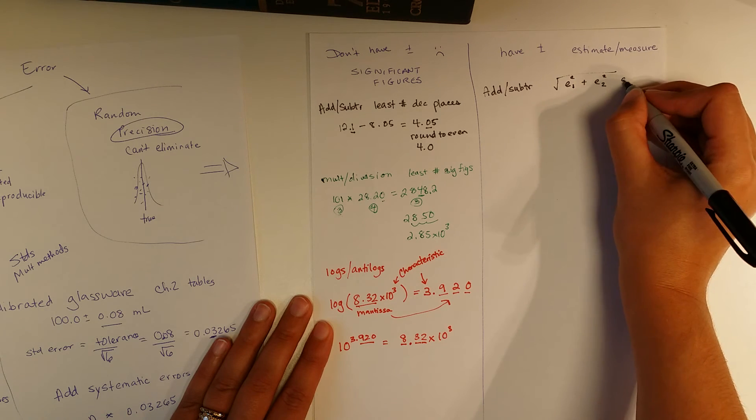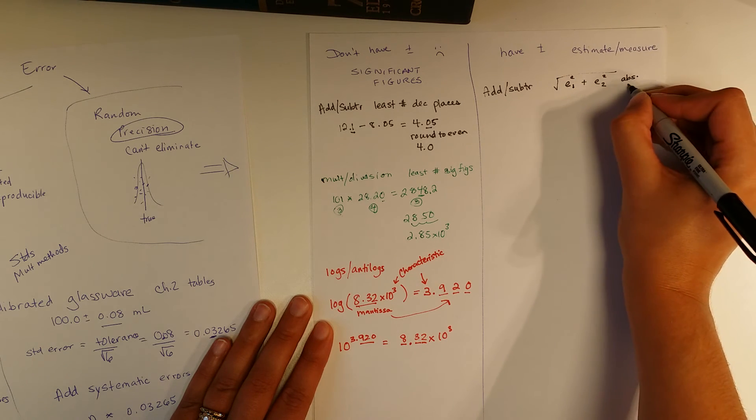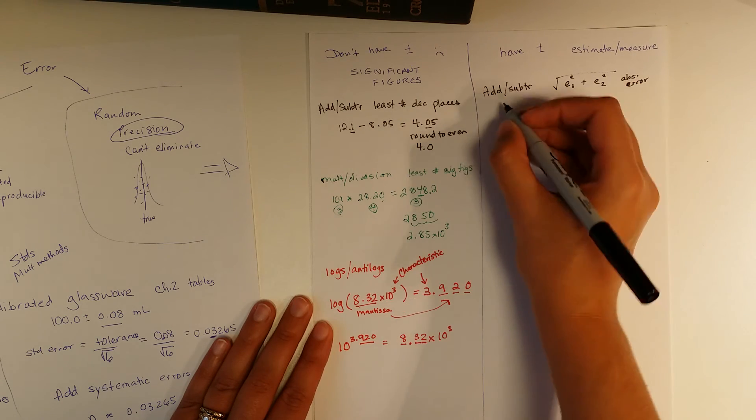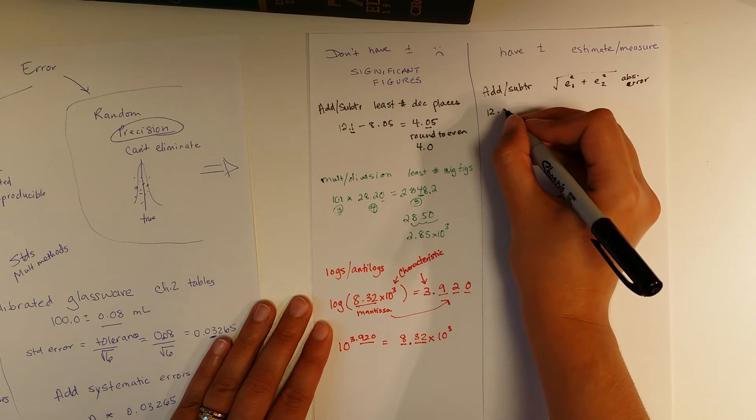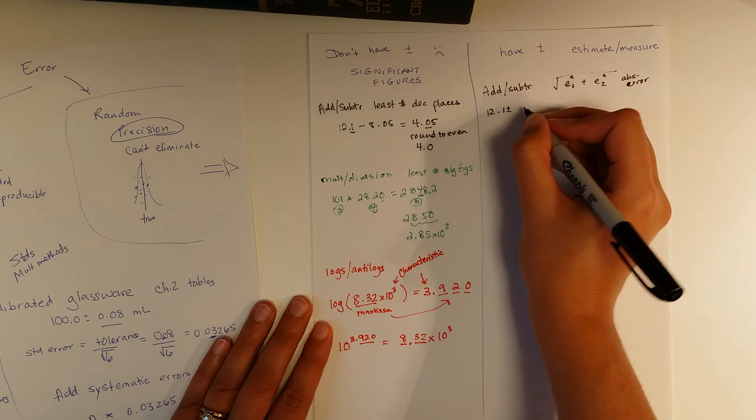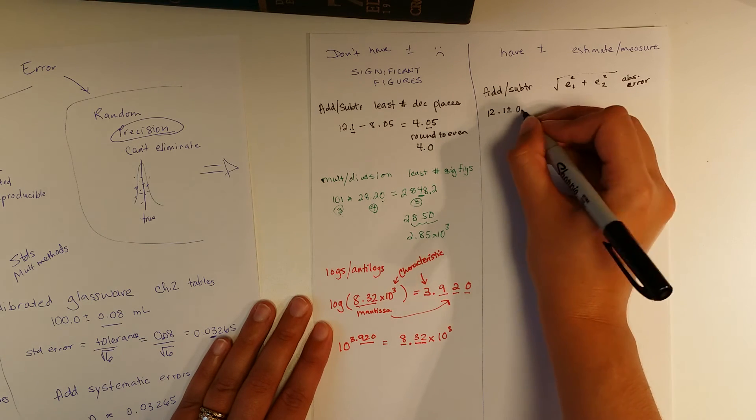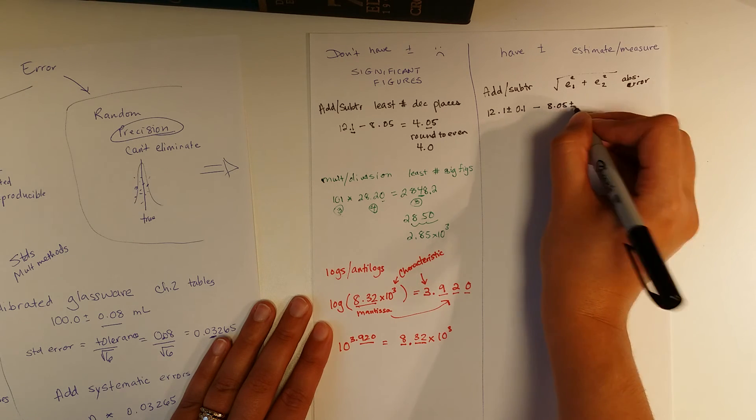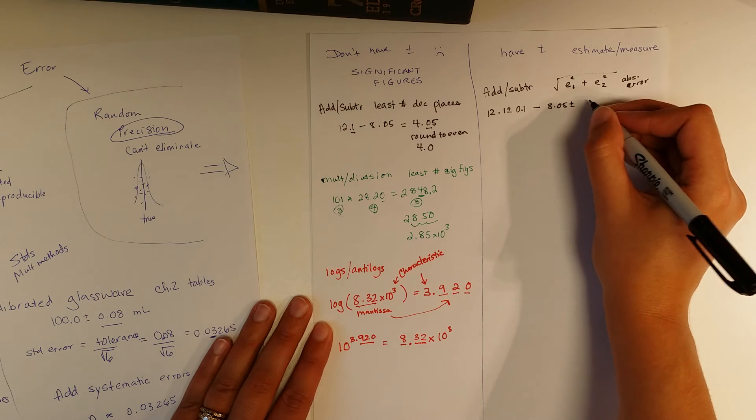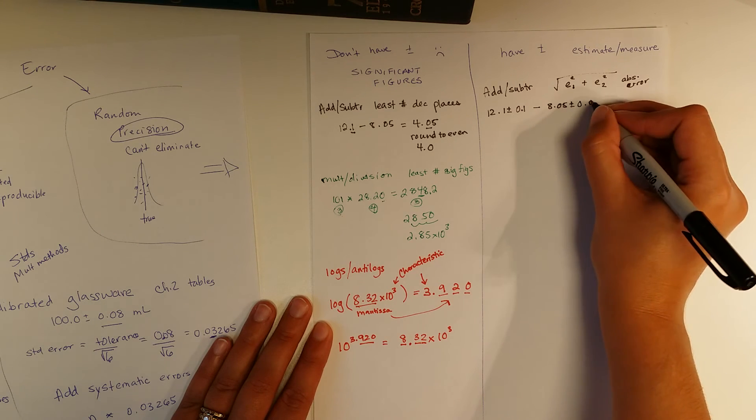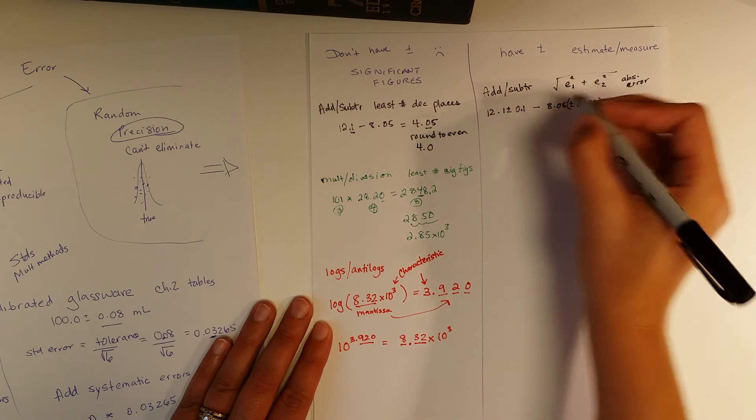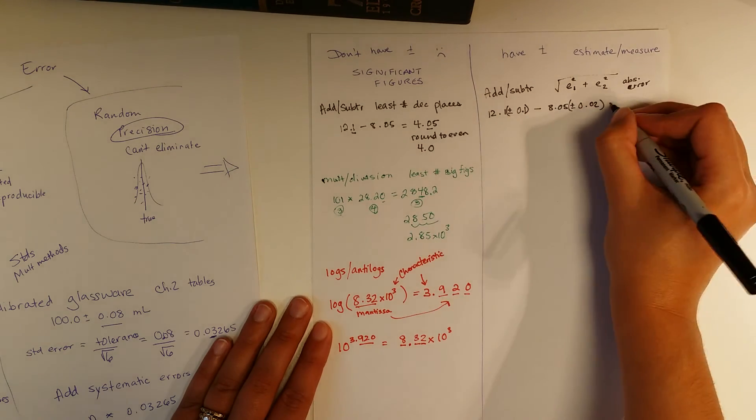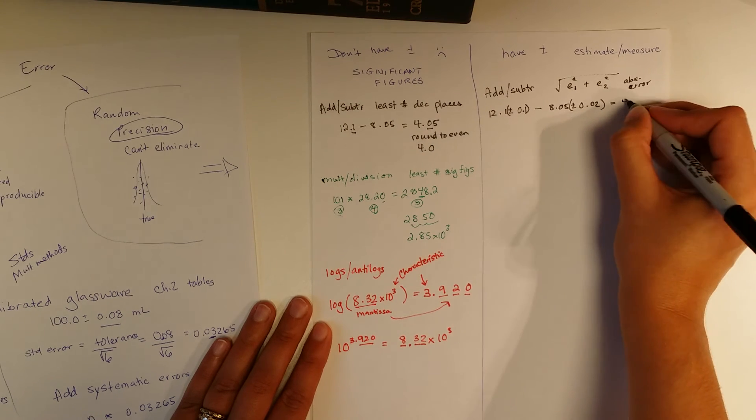So this is what's called our absolute error. For example, if we take this and we start to put numbers to it. So it's 12.1 plus or minus, I don't know, 0.1. Seems reasonable. And then it's subtracting 8.05. And now on that number, we have a plus or minus of, I don't know, 0.02. We can do this. You might set off your errors in parentheses to make it easier to look at. So we know from here that this comes out to 4.05.